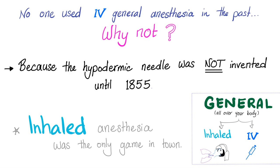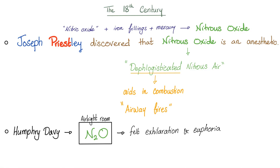Let's talk about the 18th century. Joseph Priestley — who was actually a minister, not a priest — discovered that nitrous oxide is an anesthetic. He made it by mixing nitric oxide with some iron filings and mercury, and he got nitrous oxide. He called it 'dephlogisticated nitrous air,' which means it aids in combustion. It is flammable and can lead to airway fires.